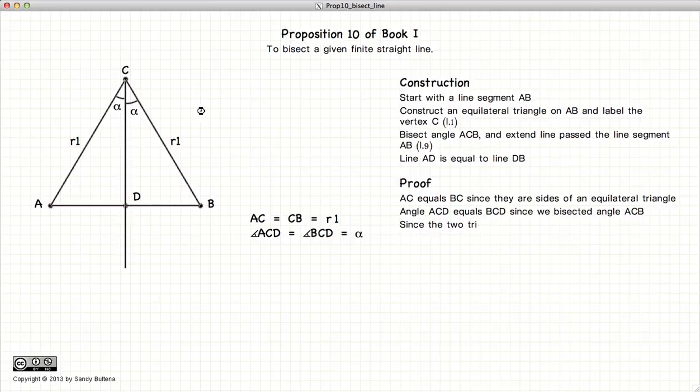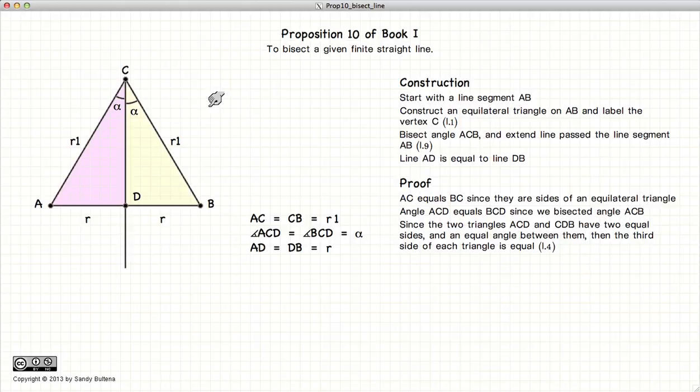So if we look at our two resulting triangles, we have R1, alpha, and length CD. And for the yellow triangle we have R1, alpha, and length CD.